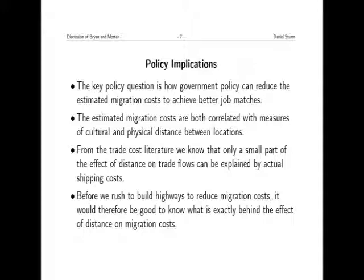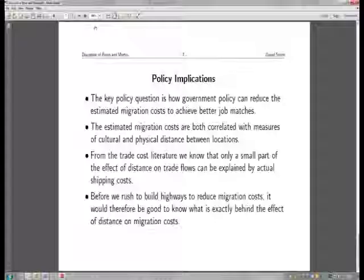Distance seems to be important over and above its direct financial costs of moving people or driving back home to see your parents. The concern is that before we start building highways as a way to reduce migration costs and improve job matches, it would be good to understand what is behind this distance effect. Even after stripping out proxies for cultural differences, much of the remaining distance effect may reflect other unobserved cultural differences. If building a road is all it takes for someone to move to a high-quality job, then obviously we should build it. But if people are very attached to where they come from due to ethnic differences, then the policy recommendation of uprooting people may not be as clear.